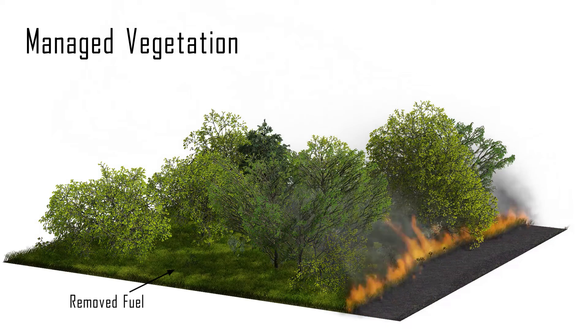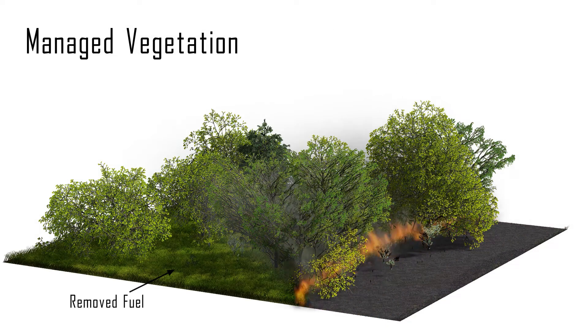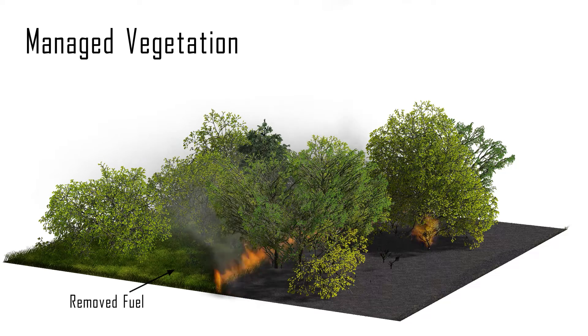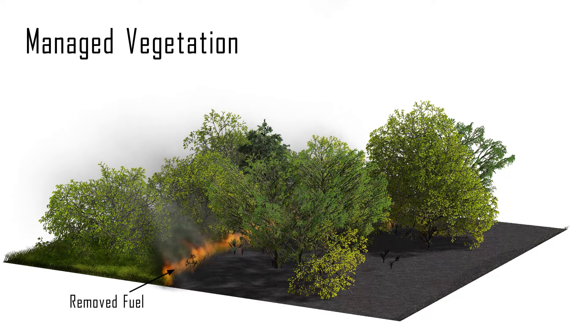Vegetation management deals with removing vegetation in the middle layer of a forest, which may severely reduce the risk of a crown fire emerging.